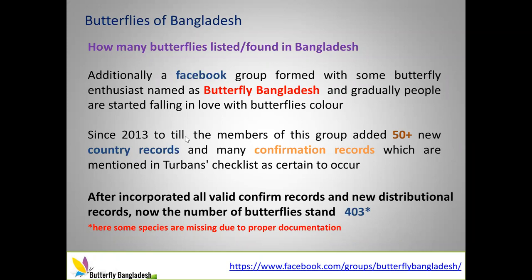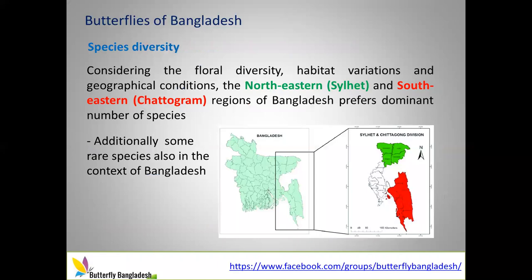After incorporating all valid confirmed records and new distributional records, we can now say 403 species have been recorded so far. But there is some confusion because many people are photographers and nature enthusiasts who don't publish scientific documentation on new records, so some data and the actual number are uncertain.